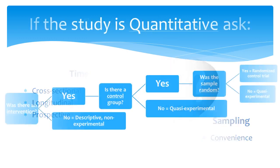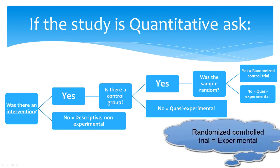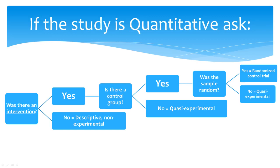To decide how to classify the design of a study, follow the steps outlined in this video. Ask yourself the following three questions: Was there an intervention? Is there a control group? Was the sample random? The answers to these questions will tell you how to classify the design of any quantitative study as descriptive non-experimental, quasi-experimental, or experimental. Check with your teacher to see what other labels they may be expecting, just in case they want a little more detail.